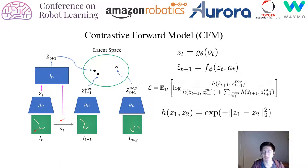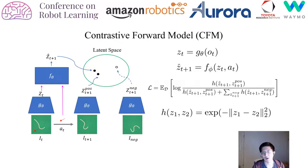The loss that we train on is the NFO-NCE contrastive loss, where h is some arbitrary similarity function. In this specific case, we use e to the minus L2 norm of the two latents. Essentially, this loss brings together the predicted ẑ_{t+1} and the positive, or actual, next time step latent z_pos_{t+1}.